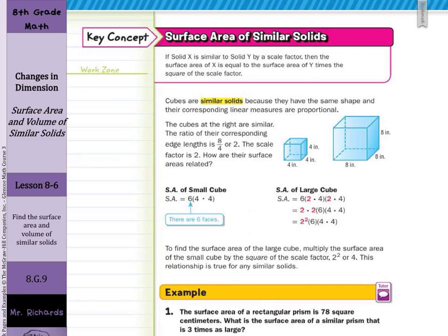So our key concept, surface area of similar solids: if solid X is similar to solid Y by a scale factor, then the surface area of X is equal to the surface area of Y times the square of the scale factor.